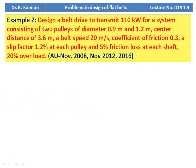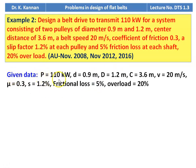Example number 2: Design a belt drive to transmit 110 kilowatt for a system with two pulleys of diameter 0.9 meter and 1.2 meter, center distance 3.6 meter, belt speed 20 meters per second, coefficient of friction μ = 0.3, slip factor 1.2 percent at each pulley, 5 percent friction loss at each shaft, and 20 percent overload. This question appeared in November 2008, November 2012, and 2016.